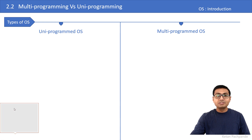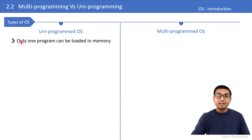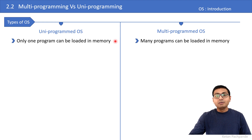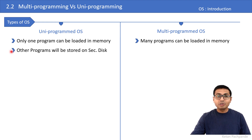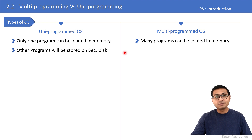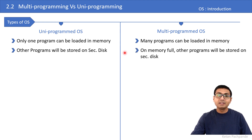In a uniprogrammed operating system, only one program can be loaded in memory (RAM) at a time. Whereas in the multiprogrammed architecture, more than one process or program can be loaded in memory by the operating system. In a uniprogrammed OS, even if there is space available, the OS shifts all other processes to the secondary disk. In a multiprogrammed OS also, once memory is full, the OS can shift the remaining processes to the secondary disk.